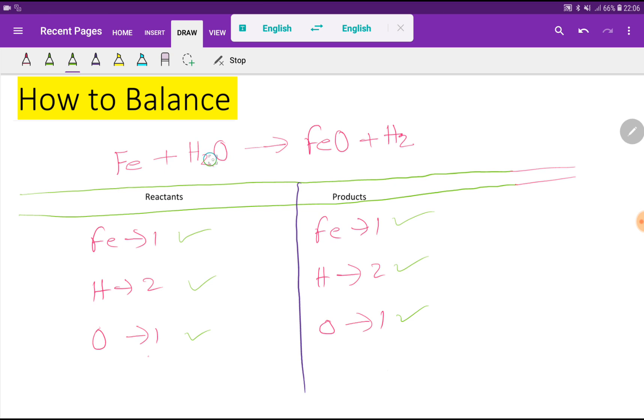This reaction is already balanced. At last, you have to change this arrow sign to an equal sign.